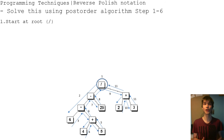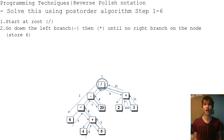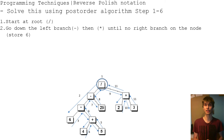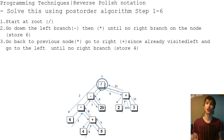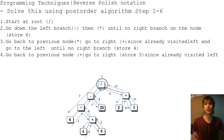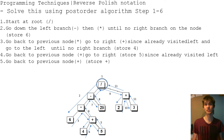Here's an example of working through the post-order traversal. Start at the root and go down to the left branch, which is minus, then times. Keep going down until there is no right branch — you get to 6, so store 6. Go back to times and go to the right, which is plus. Go left until no right branches, so store 4. Go back to plus, go to the right branch and store 5, since you have already visited the left. Go back to plus and store plus. Go back to times and store times.